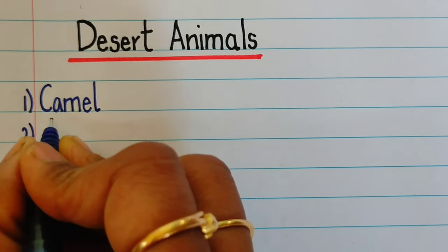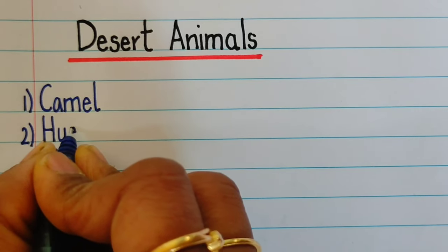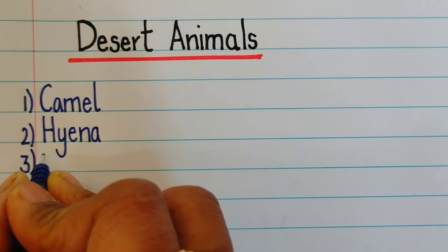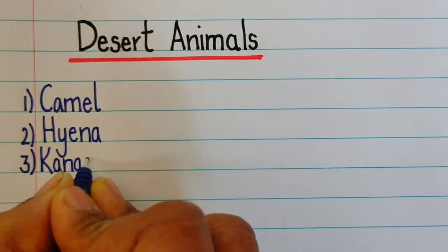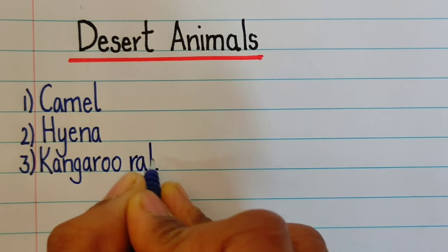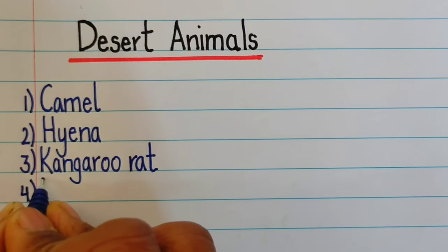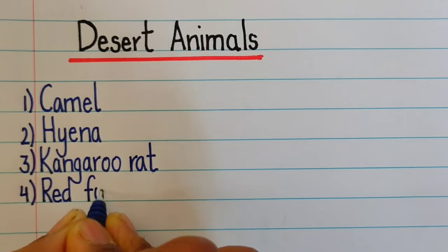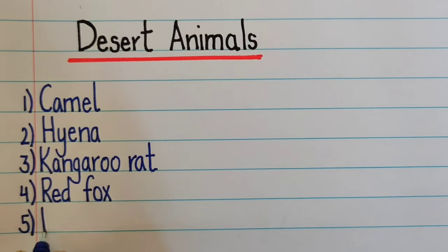Second one is hyena. Third one is kangaroo rat — k-a-n-g-a-r-o-o r-a-t, kangaroo rat. Fourth one is red fox — r-e-d f-o-x, red fox.